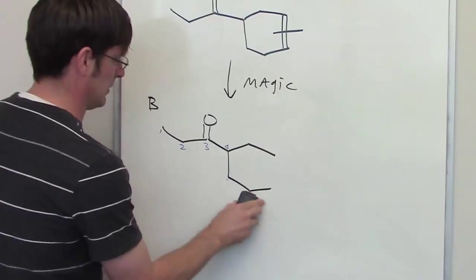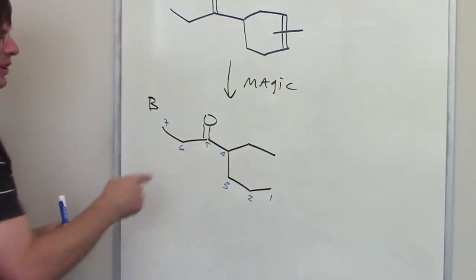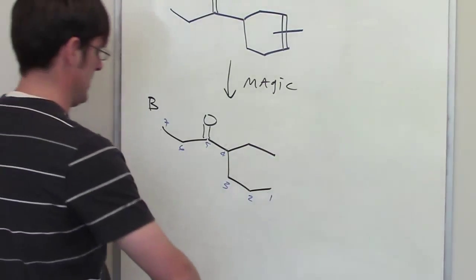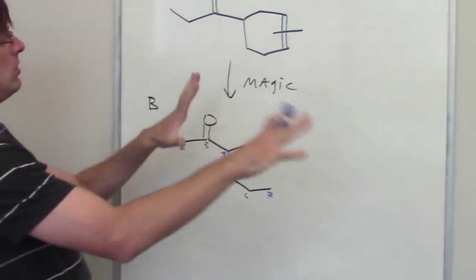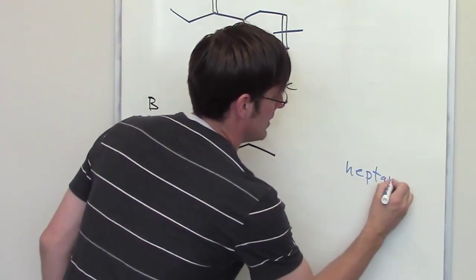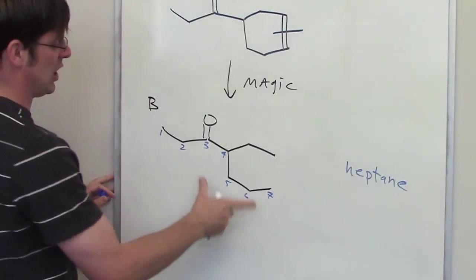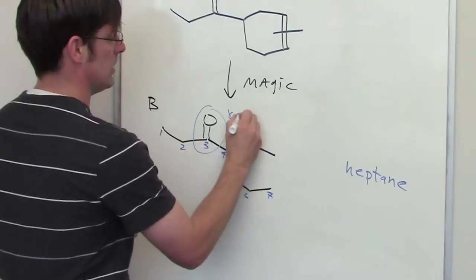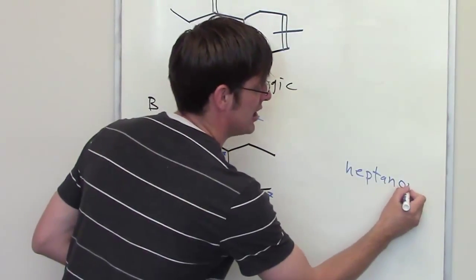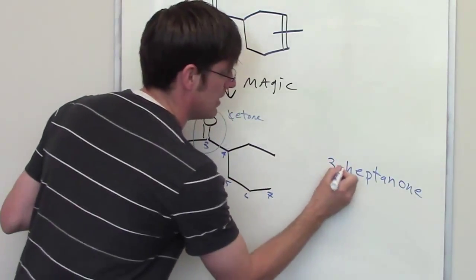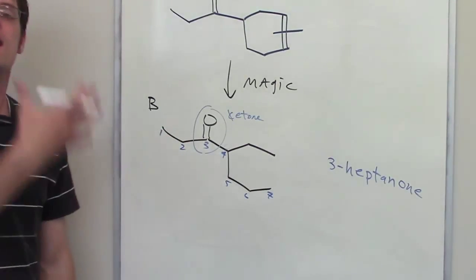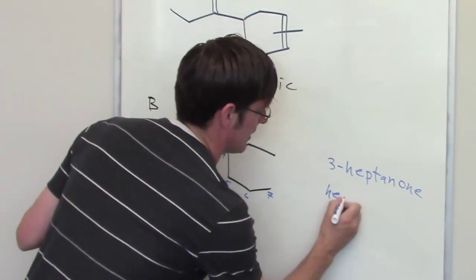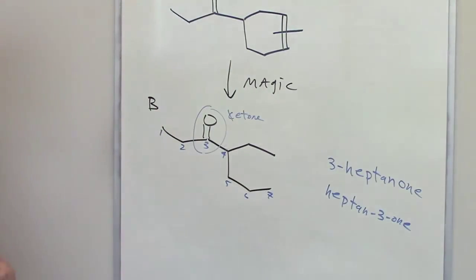Alternatively, we could number in the opposite direction. Which direction is correct? It's the one that gives me the lower number at the carbon doubly bonded to oxygen. So the first direction I wrote is correct. I've got a seven carbon long chain. Normally a seven carbon chain with nothing in it is called heptane. This however has a double bond to oxygen right in the middle - it's a ketone. I take the E off and replace it with the suffix -one. I also have to place the number 3 in front to indicate which carbon in that seven carbon chain is doubly bonded to oxygen. By IUPAC standards, this is acceptable as 3-heptanone or heptan-3-one.